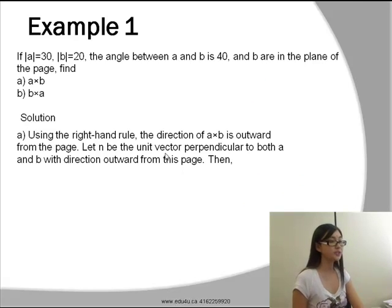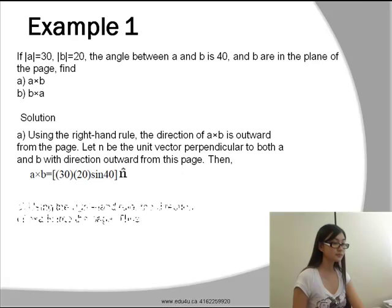Let N be the unit vector perpendicular to both A and B with the direction outward from this page. Then A cross B will be equal to 30 times 20 times sine 40 times the unit vector.